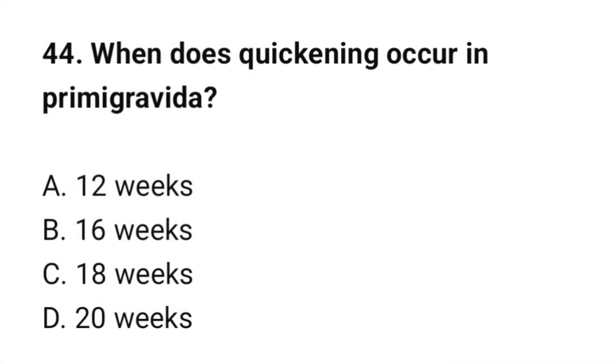Question number 44. When does quickening occur in a primigravida? The correct option is C: 18 weeks.